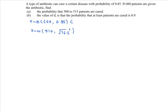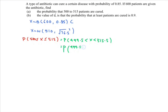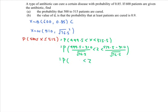Next, referring to the question, we have the probability that x is greater than or equal to 500 and less than or equal to 515. First, what we have to do is the continuity correction. So the continuity correction would be 499.5 and 515.5. Next is to standardize. So the probability is 499.5 minus 510 over the square root of 76.5. Simplifying, we have z greater than negative 1.2 and less than 0.63.